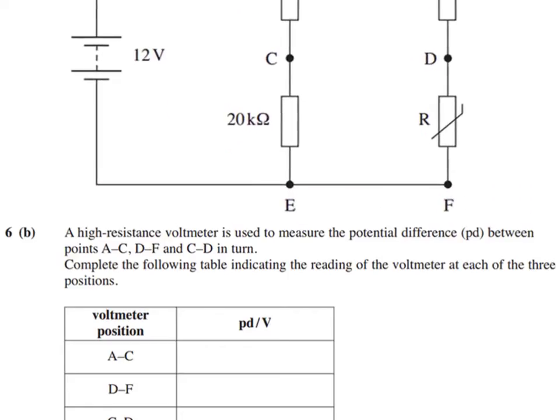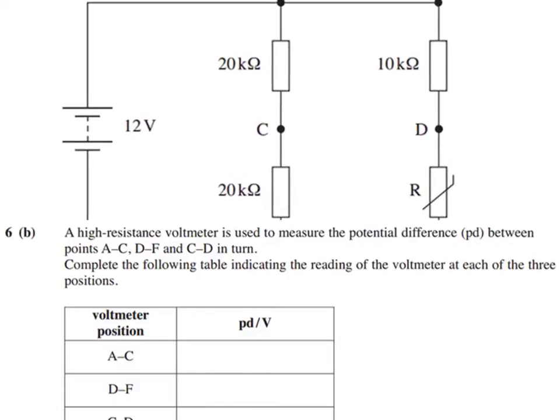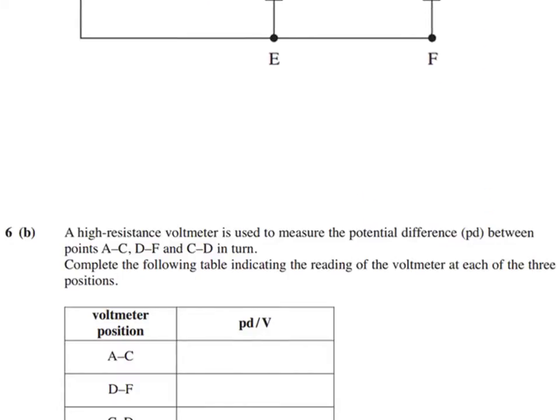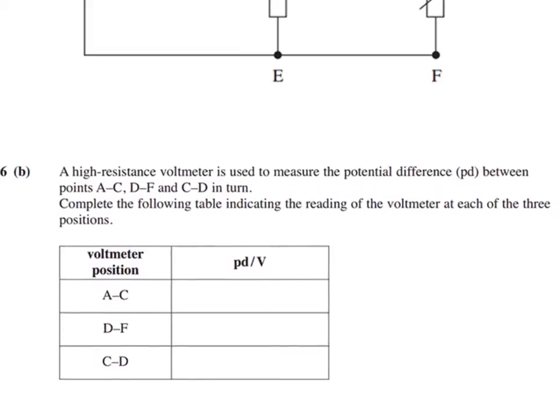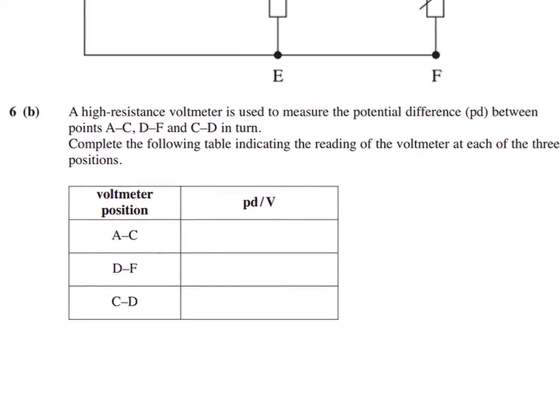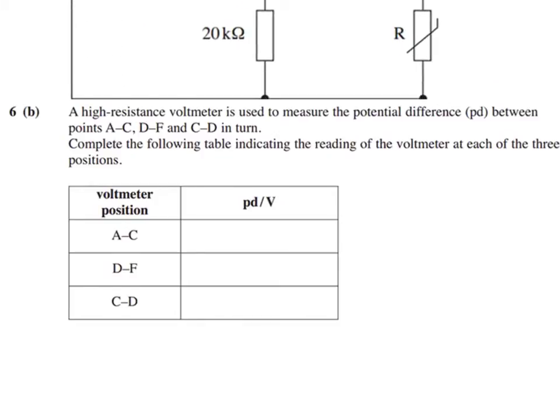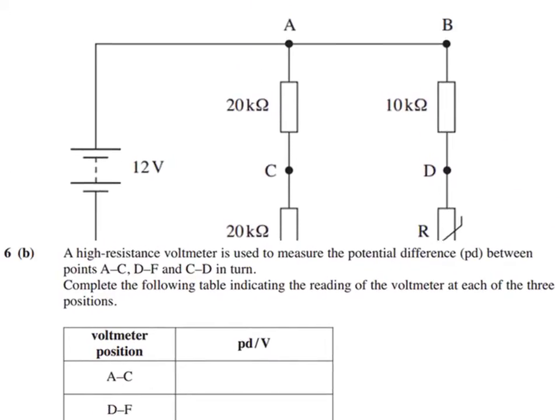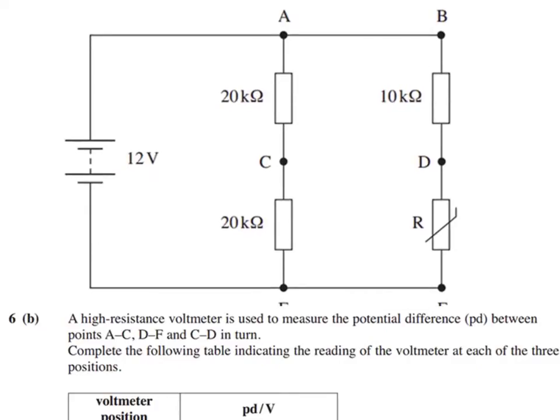So we're still using the same circuit as before, so bearing in mind those values up there. What we need to do now is calculate some potential differences around our circuit. So the first one it wants to calculate is between A and C, so let's have a look on our diagram where that is. So that's basically across this resistor up here, between A up here and C up there.